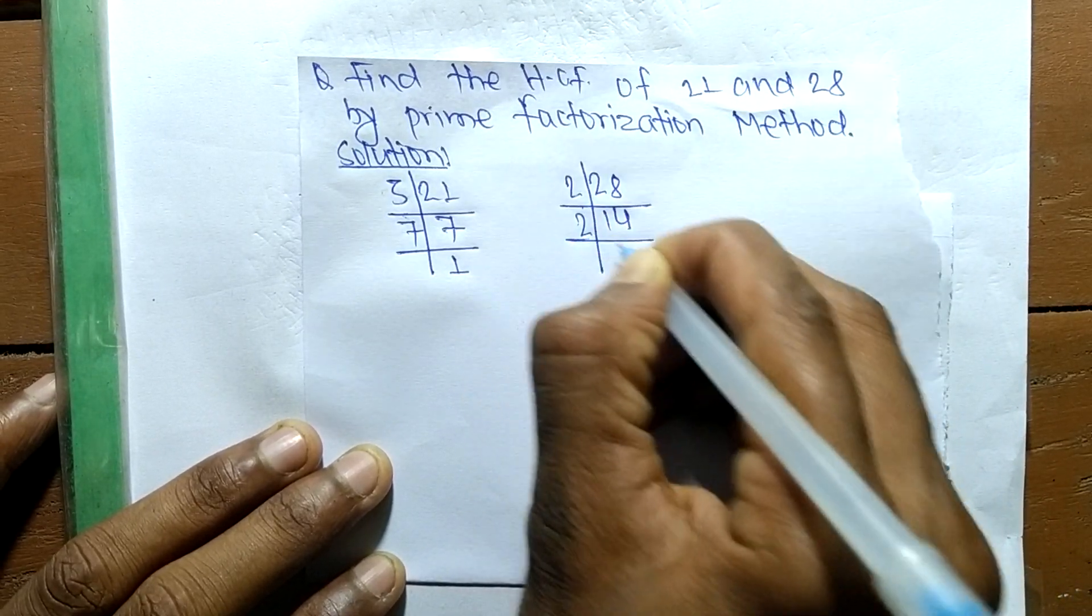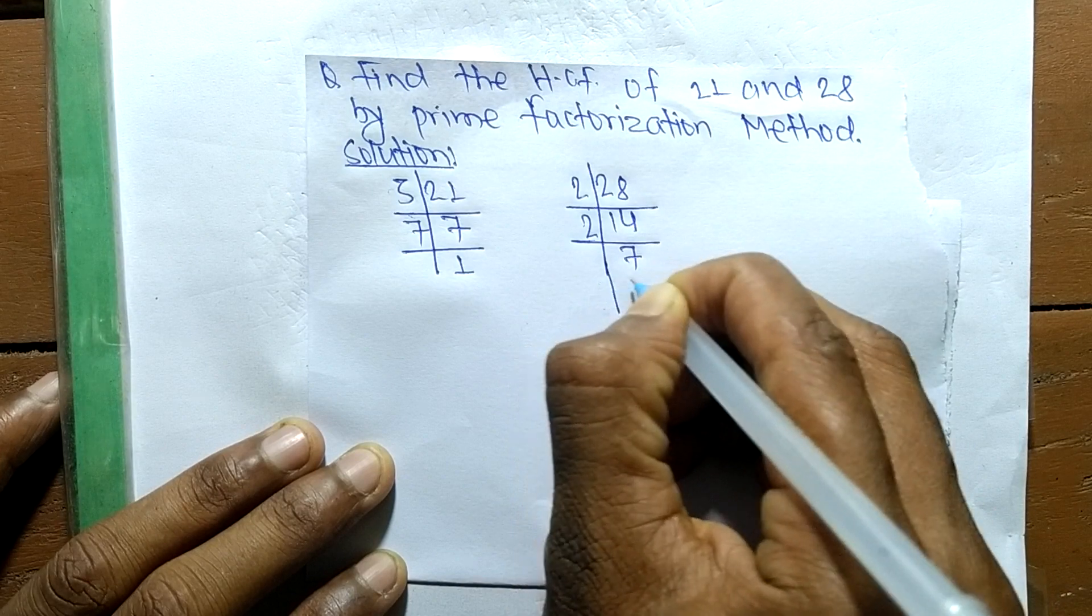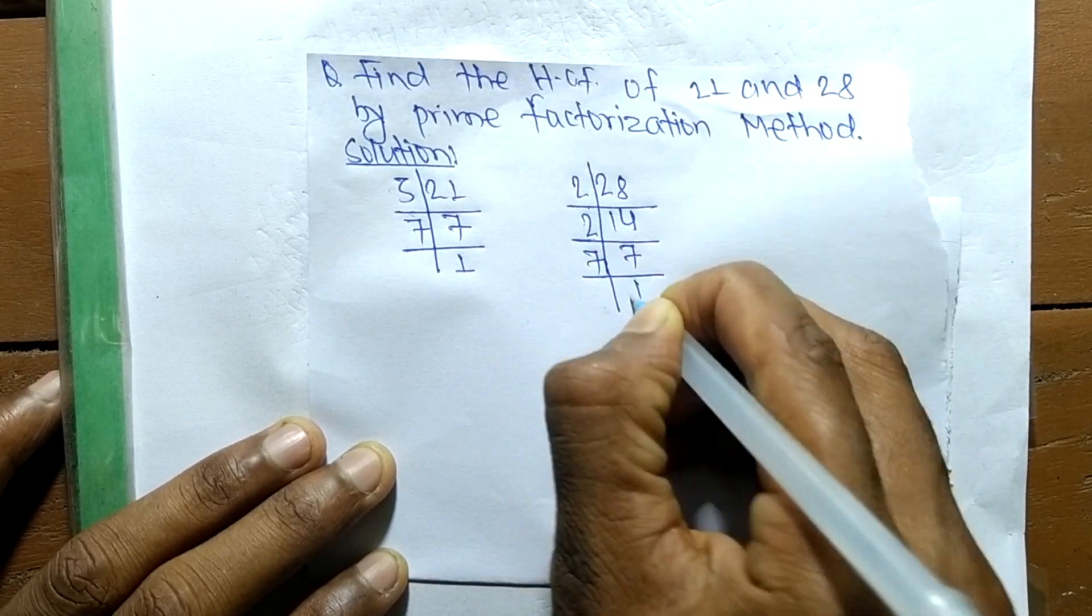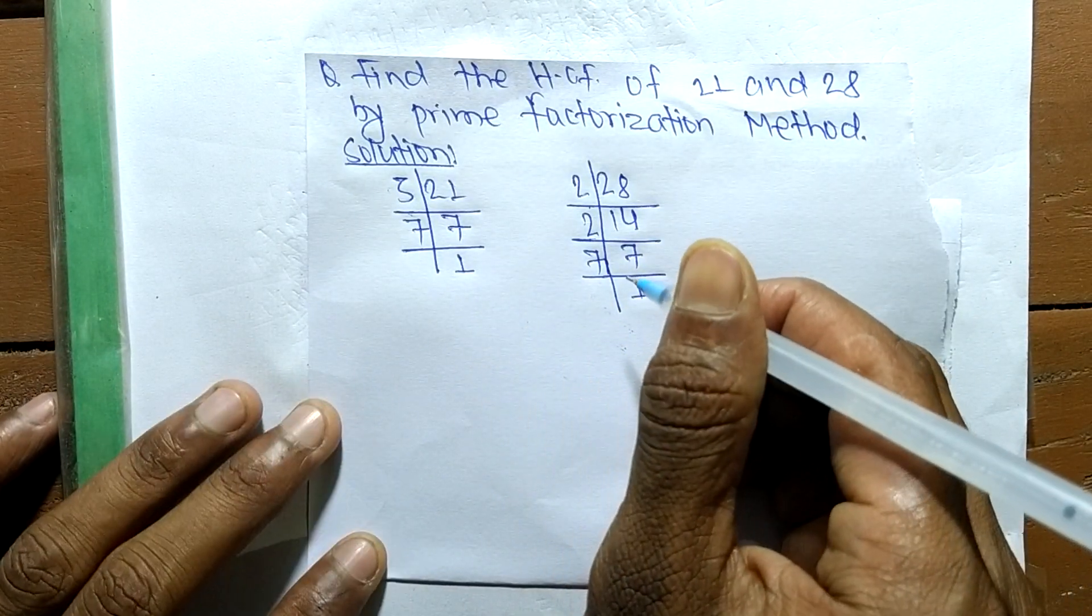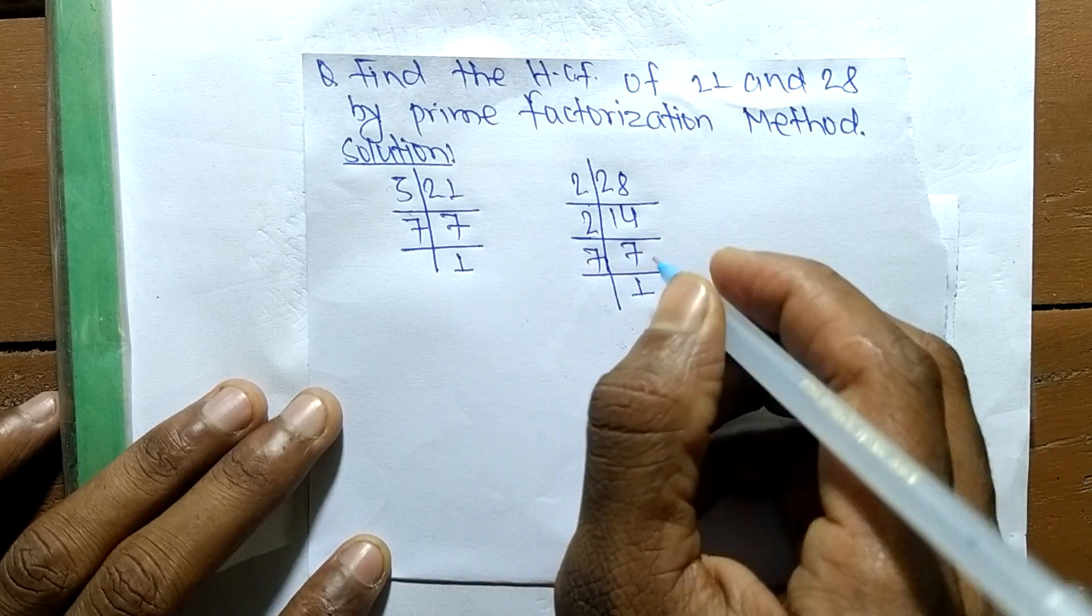2 times 7 equals 14, and 7 times 1 equals 7. So now from these prime factors,